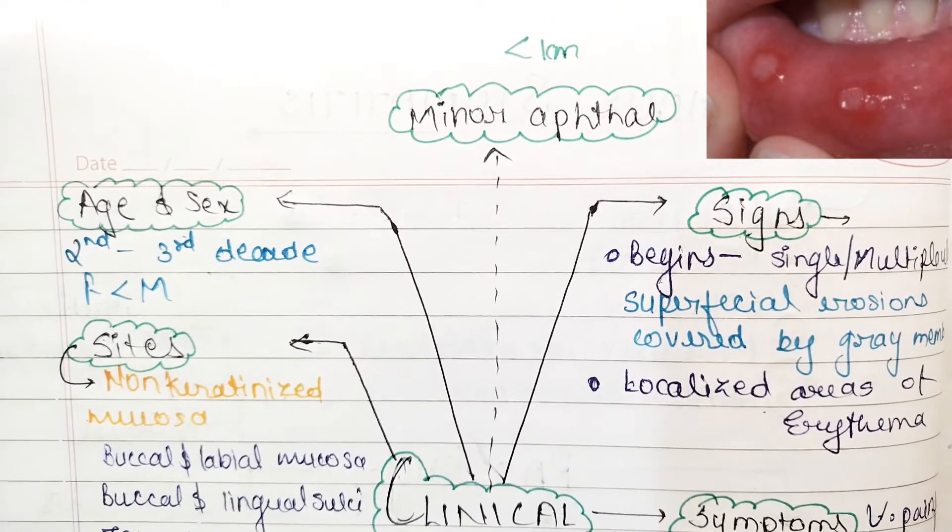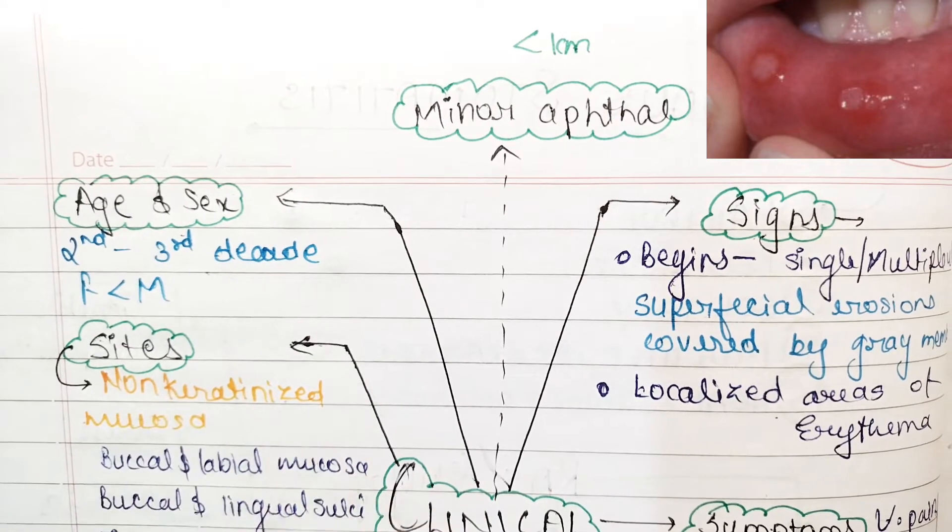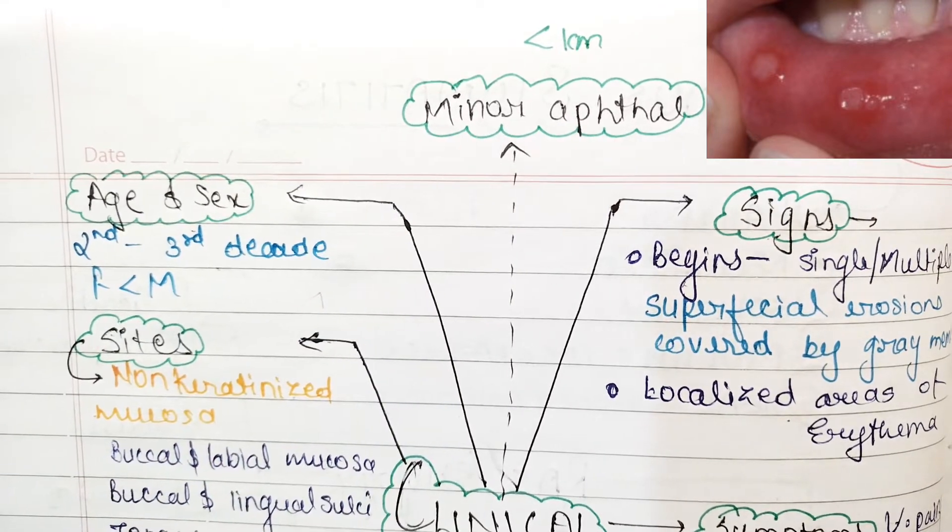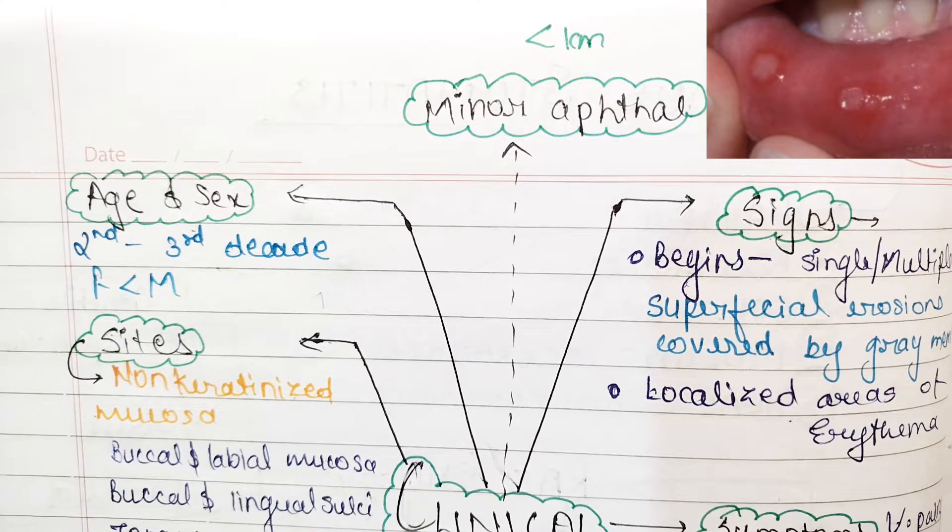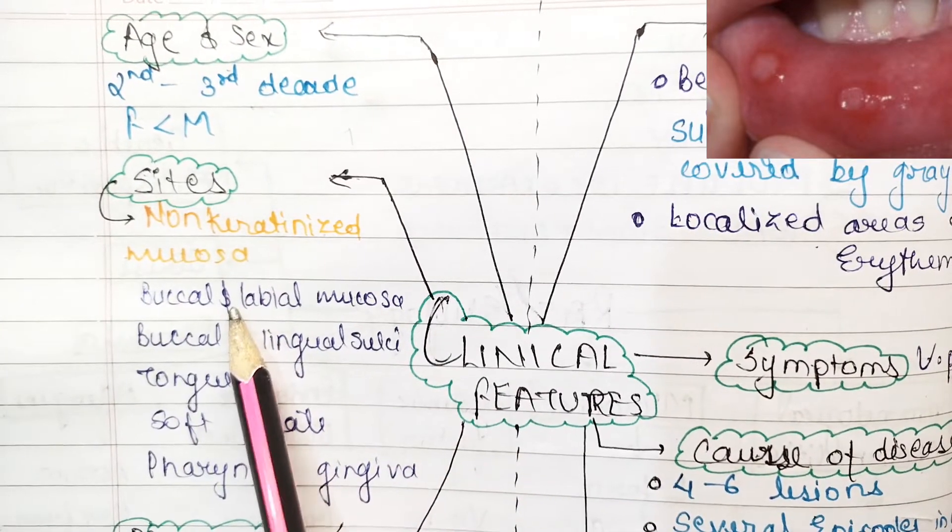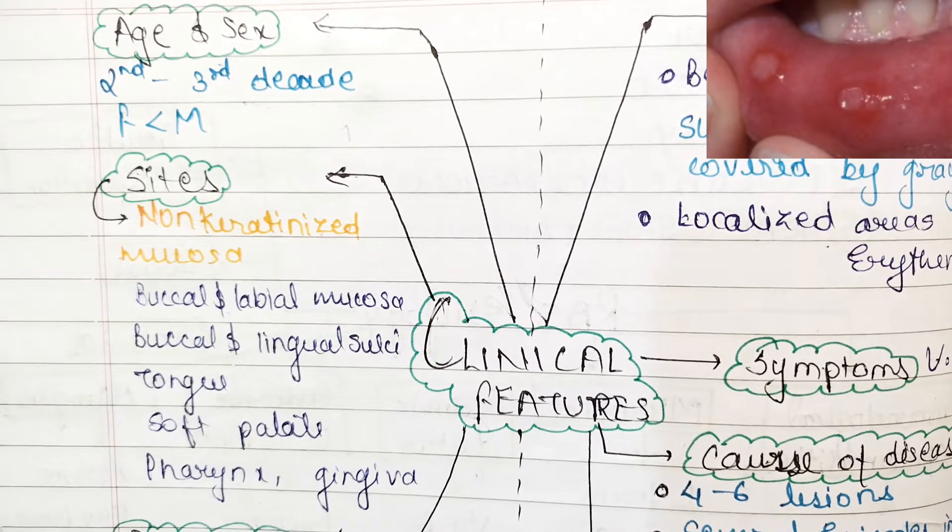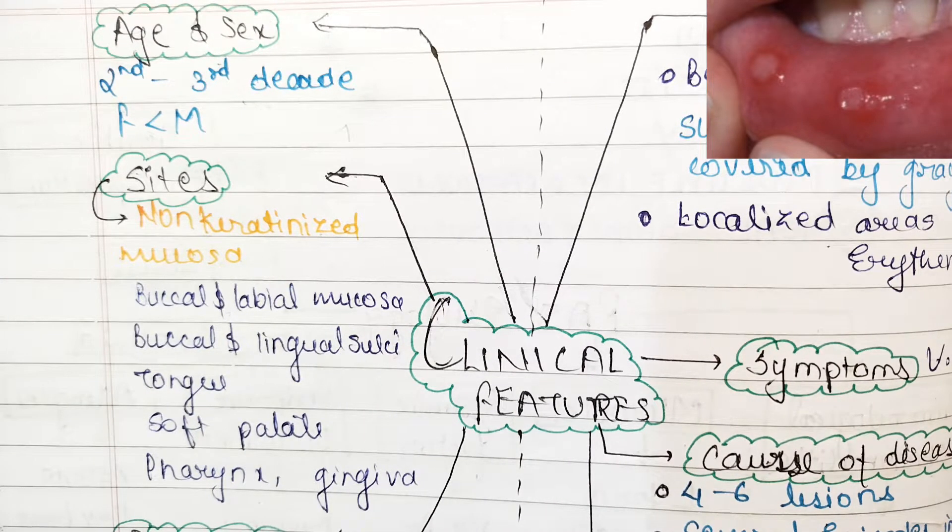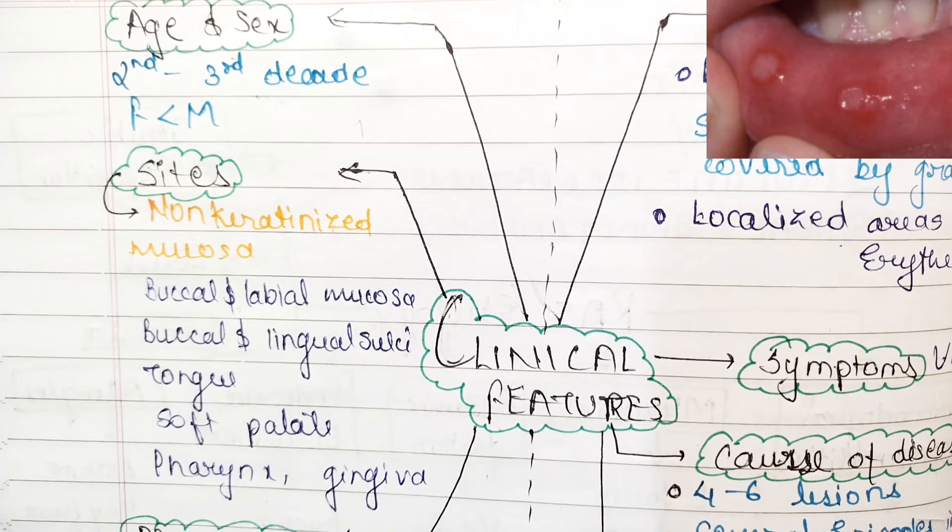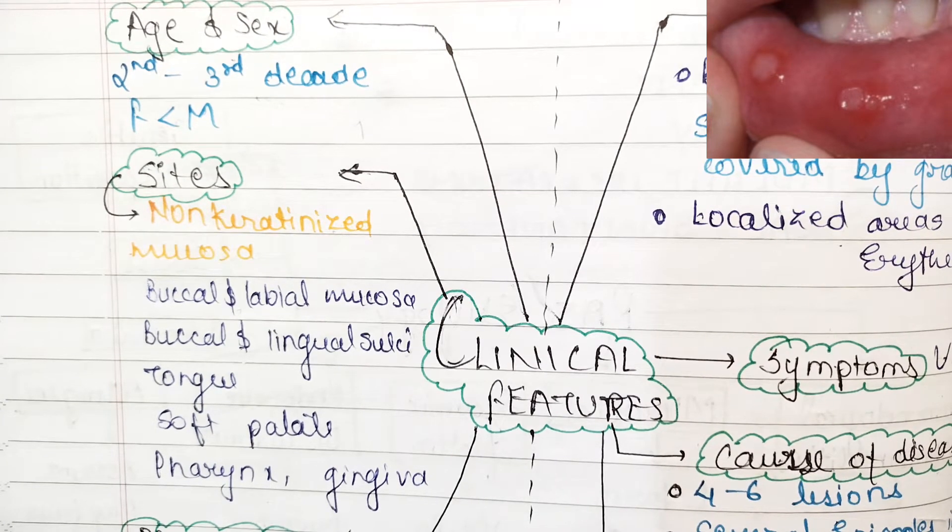Coming to the clinical features of aphthous stomatitis, first we'll see age and sex. They majorly happen in 2nd and 3rd decade and males are more prone to this disease than females. If we look at the site, it is majorly non-keratinized mucosa. But when we see major aphthae and herpetiform ulcers, they can also affect keratinized mucosa. Majorly you will see non-keratinized mucosa.